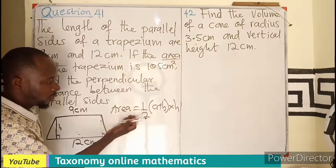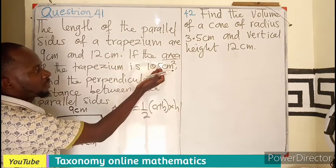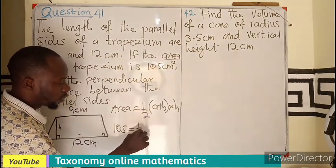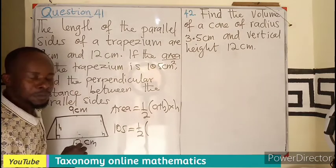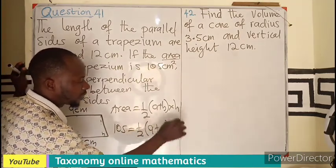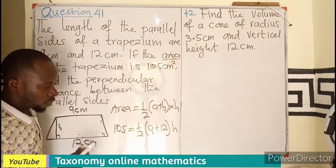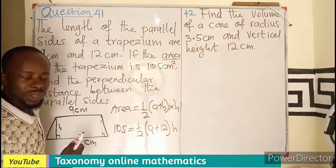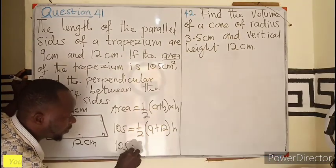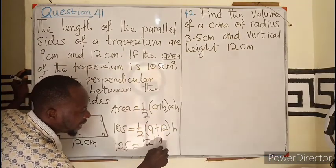A stands for the 9, B stands for the 12. So I know the area as 105, so 105 equals to 1 over 2, 9 plus 12 times height.